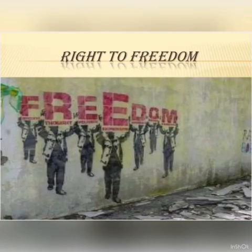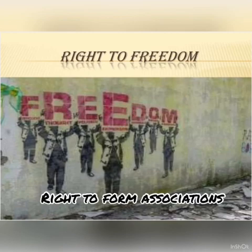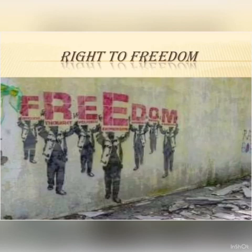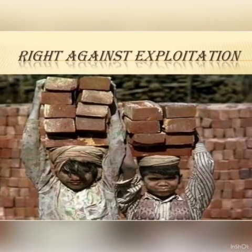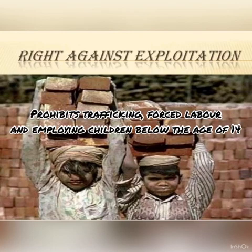Right to freedom means that under this right, a citizen has the right to freedom of speech and expression, the right to form associations, and the right to move freely and reside in any part of the country. The next right is the right against exploitation. As you can see here, the picture of two children carrying bricks on their heads is given, which means they are under forced labor. This right prohibits trafficking and forced labor.